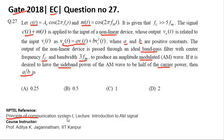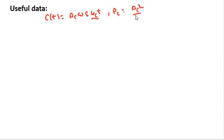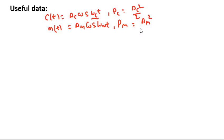The reference for this question is Principles of Communication Systems. The useful data is: if you have c(t) equal to Ac·cos(ωc·t), where Ac is the amplitude and ωc is the carrier frequency, then its power is Ac²/2. Similarly, if you have message signal m(t) equal to Am·cos(ωm·t), then its power Pm equals Am²/2.